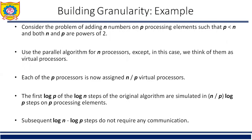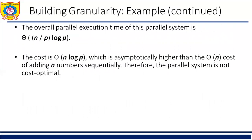We are considering the same problem of adding n numbers where p < n. We use the parallel algorithm for n processors, except we treat them as virtual processors. Each of the p processors is assigned n/p virtual processors. The first log p of the log n steps are simulated in (n/p) log p steps on p processing elements; subsequent log n − log p steps require no communication. The overall parallel execution time is O(n/p × log p), and the cost is O(n log p), which is asymptotically higher than O(n). Therefore, this parallel system is not cost optimal.